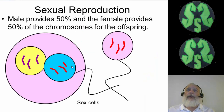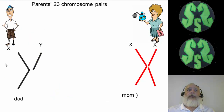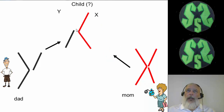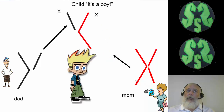Now if the sperm has the Y chromosome in the 23rd pair, the dad is giving the Y chromosome instead. The mom again gives an X. So there's one Y chromosome and one X chromosome, and the child will then be a boy.